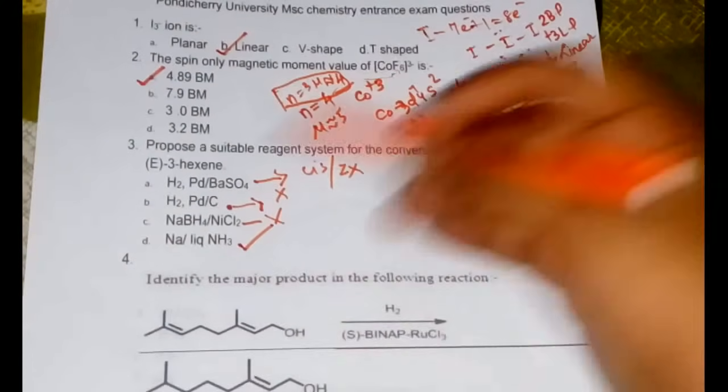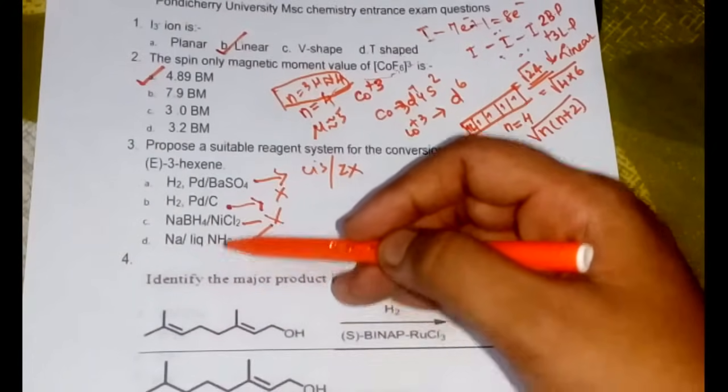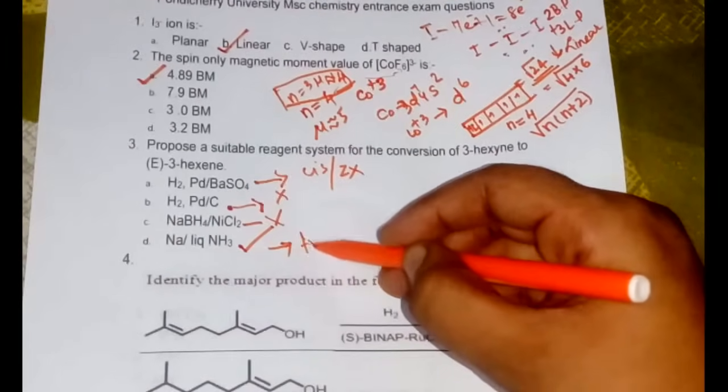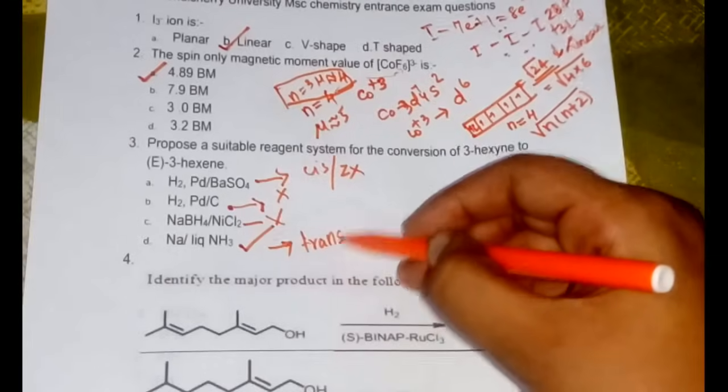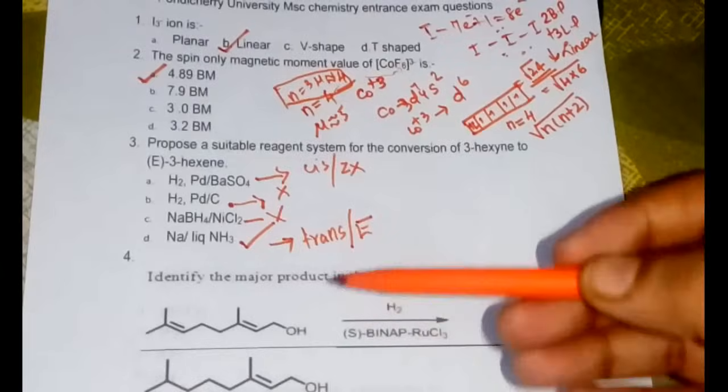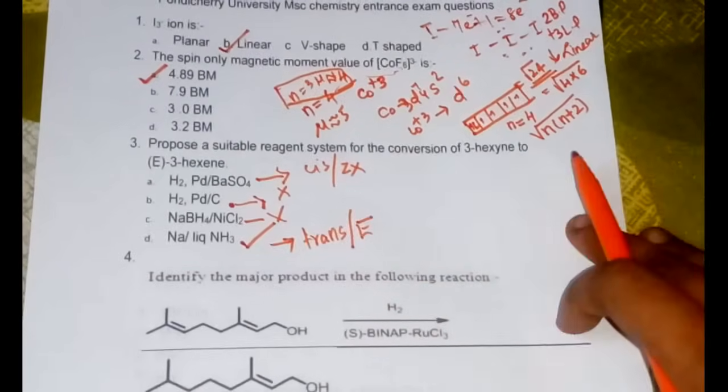So the answer should be finally sodium and liquid ammonia. I have already told sodium liquid ammonia would be converting the alkyne to trans alkene or we can also say E alkene. Therefore our answer would be option D.